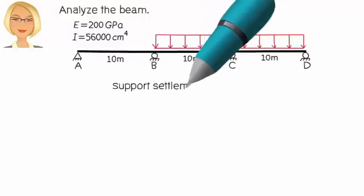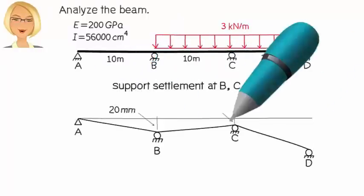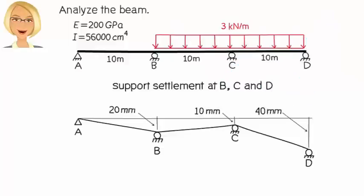Suppose the beam experiences support settlement at B, C, and D. B settles by 20 millimeters, C settles by 10 millimeters, and D settles by 40 millimeters.